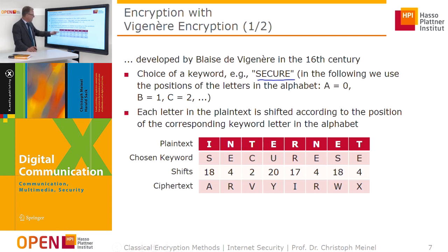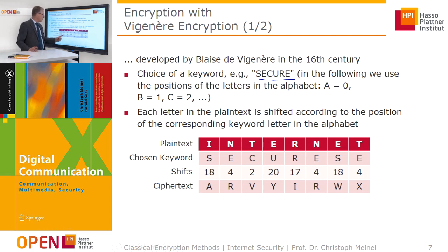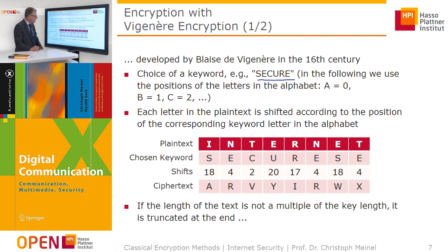For example, with the plain text 'the message in the net' and keyword 'the cure': S is the 18th letter of the keyword so I is shifted by 18 positions to get A. Below N we have E, which is the 4th letter, so N is shifted by 4 positions to get R. For T we have C in the keyword, which has position 2, so T is shifted by 2 positions. In this way we obtain an encrypted text.